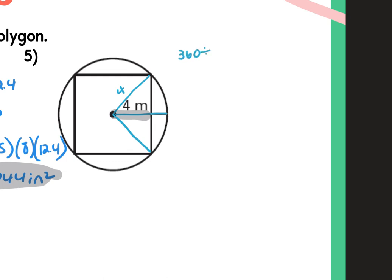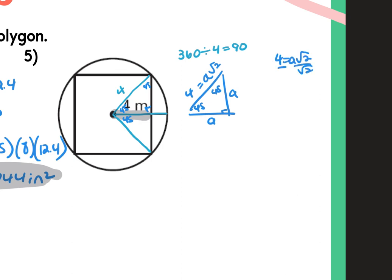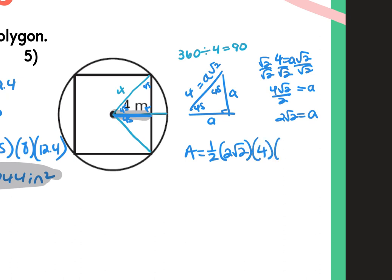With the 45-45-90 triangle, both legs are A (the apothem) and the hypotenuse is A√2. That hypotenuse is the radius, which equals 4. So if 4 equals A√2, divide by √2 and rationalize to get 4√2 over 2, which is 2√2 — that's the apothem. The side of the isosceles triangle is also 2√2, but that's only half the side length, so the full side is 4√2.